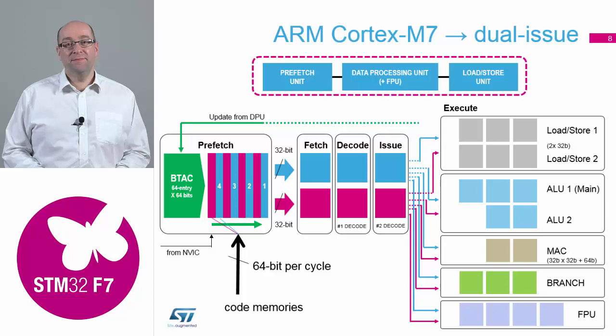This is part of what we call dual issue. Two instructions come in on the 64-bit bus and are separated out into two independent streams. These two streams then go through the normal three-stage pipeline of fetch, decode, and then issue into one of the multiple execution units on the right-hand side of the slide. We can do two load and stores simultaneously, two ALUs simultaneously, or mix either of these with a MAC instruction, a branch instruction, or a floating point instruction.